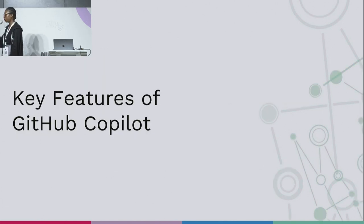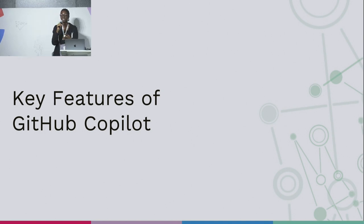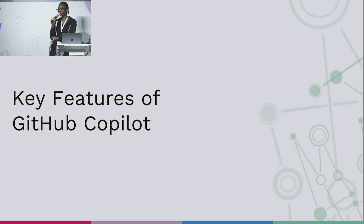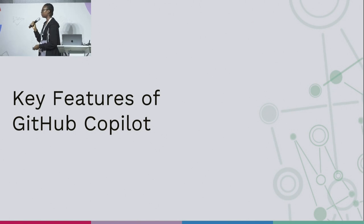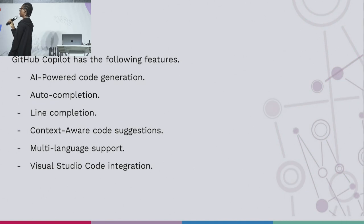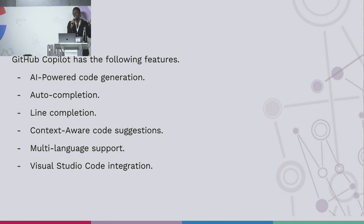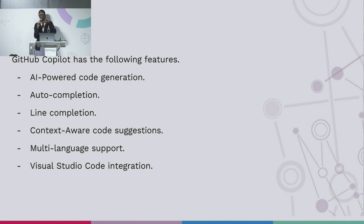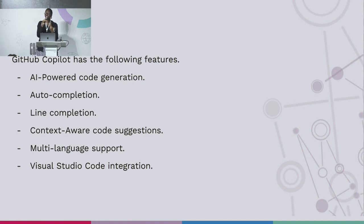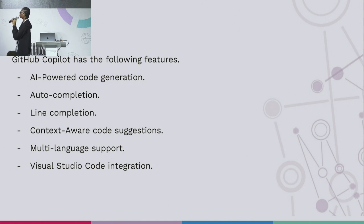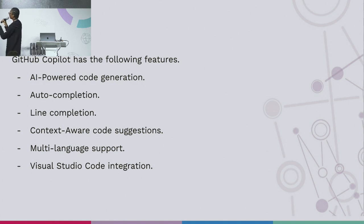So what are the key features of Copilot? The first feature is AI-powered code generation. Copilot is trained on a billion lines of code. With that in its knowledge, it knows what you are trying to do. It's going to be rare for you to write code that someone has not written before — you just can't find it. Copilot will help you generate that code, and we're going to see it in action.